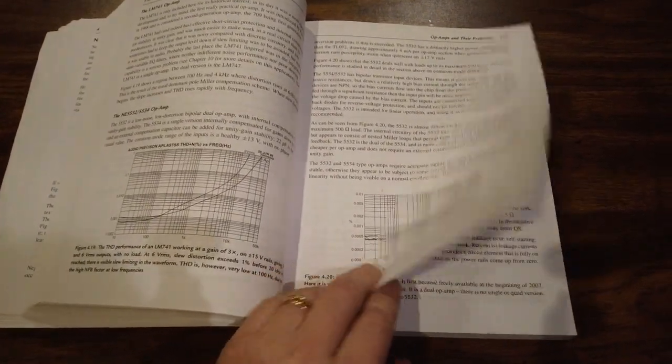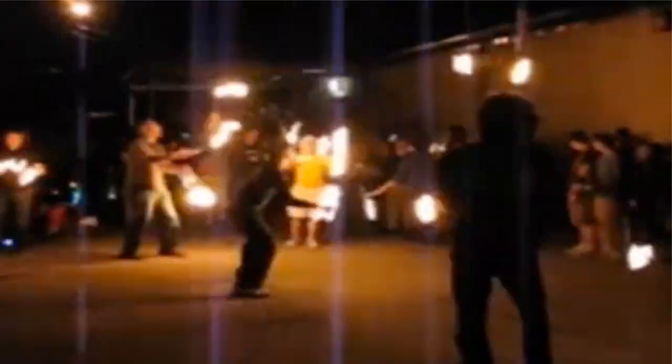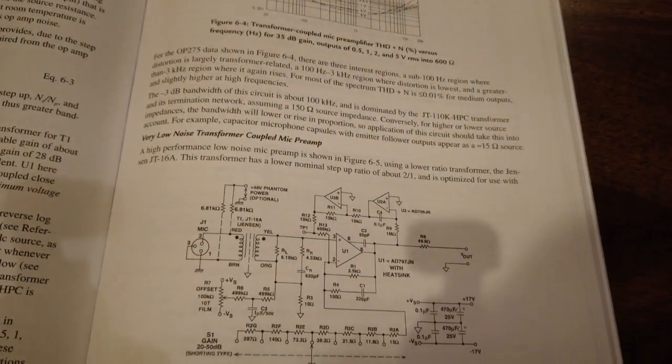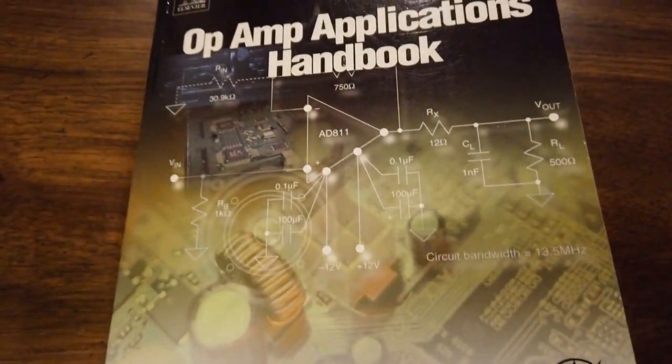Also, the 553 series is a bit power hungry and can tend to run a little hot. There are super low noise amplifiers like the AD797, but they're pretty expensive, so you only want to use those if you really need to.